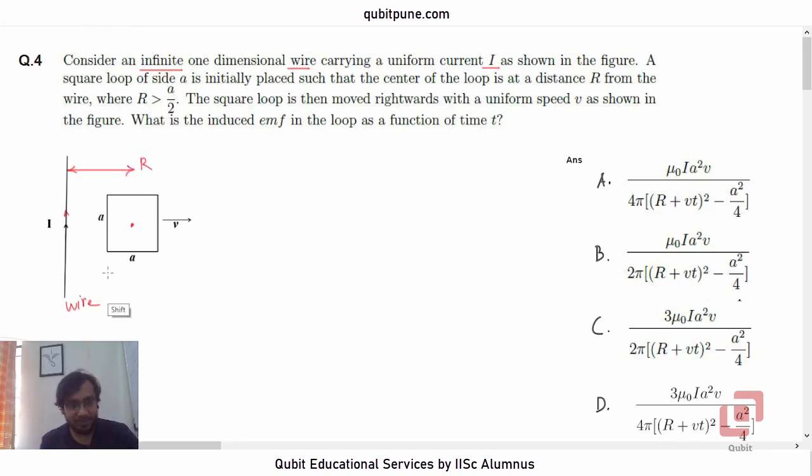So this is A by 2. If the total edge length is A, this is A by 2. And when they say R greater than A by 2, what they mean is the side of the loop which is closest to the current carrying conductor is not touching the current carrying conductor. So there is some gap here, some non-zero gap here.